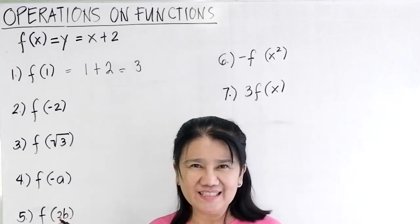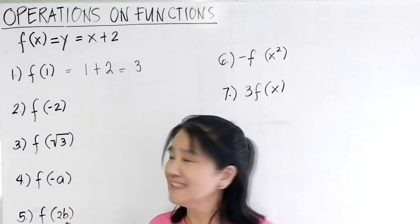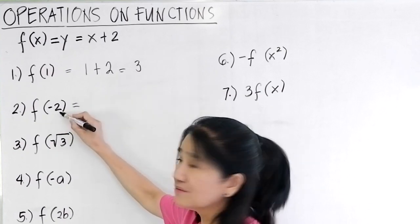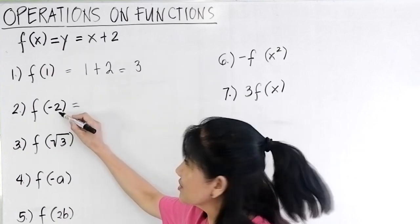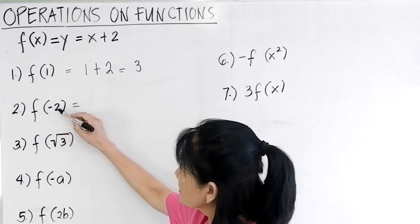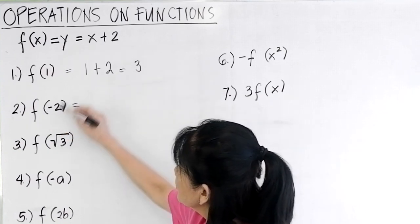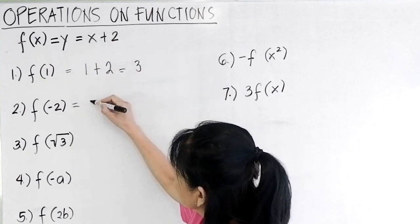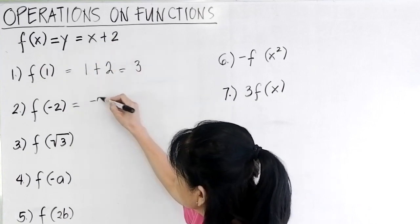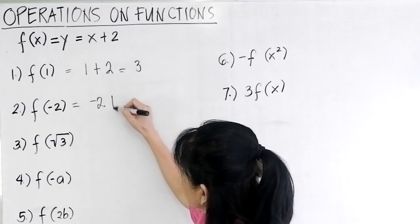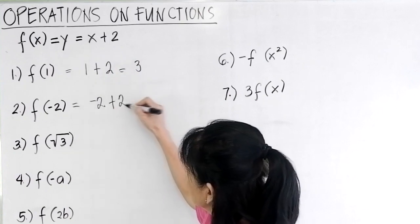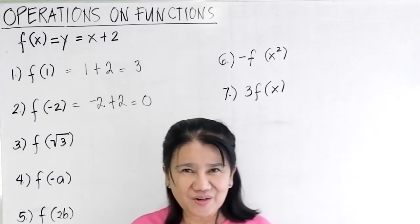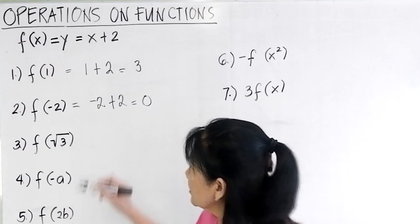Next, f(-2). So x is negative 2 — substitute negative 2 here. You'll have negative 2 plus 2, which equals 0.